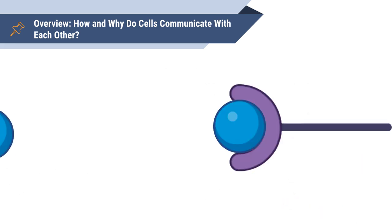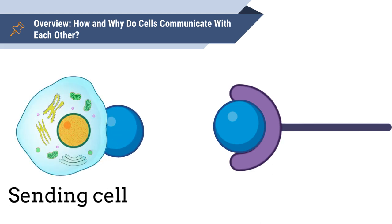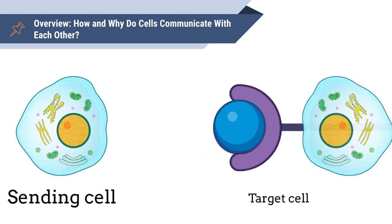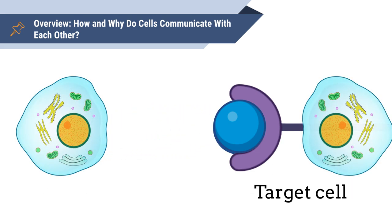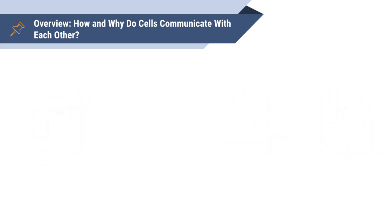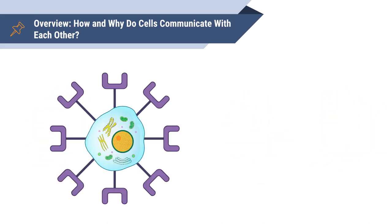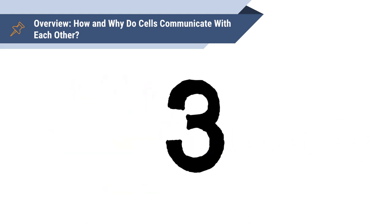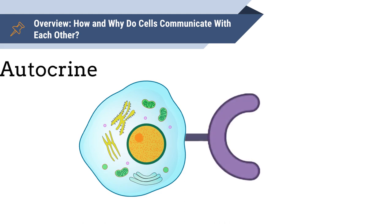Sending cells are the cells that release the signals, while target cells are the cells that contain the receptor and receive the signal. Non-target cells do not contain the receptor for the specific ligand. There are three main types of cellular signaling: autocrine signaling occurs when the cell secretes a ligand that affects the same cell.